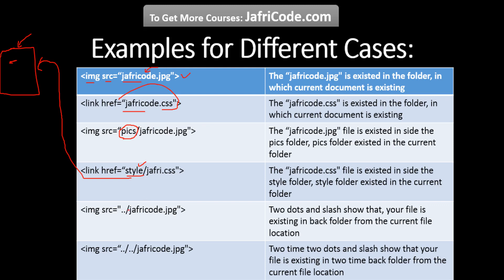Another technique is that if your image is existing backward of your current document file, then you have to mention two dots and then a slash (../). If your image is placed two times backward from the current document, then you have to mention two dots slash twice (../../). Two dots and slash show that your file is existing in the back folder from the current file location.